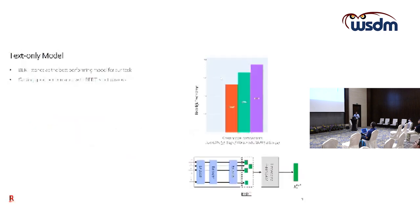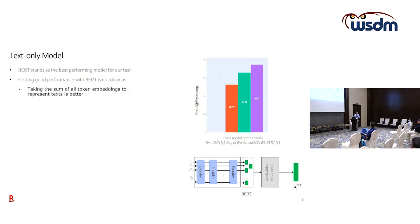I will briefly describe the single-modality architecture used as a building block to encode each modality. For text, we compared several approaches including bag of words, CNN models, and BERT. In the end BERT offered the best performance, but this was not obvious initially. When using the BERT language model, you have to decide on the final representation for the downstream task — often people in the literature recommend using the CLS token.